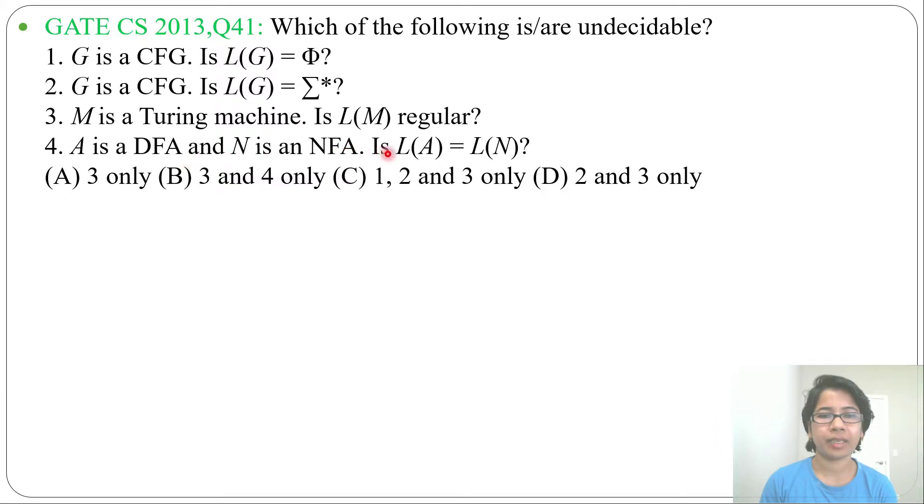Statement 4: A is a DFA and N is an NFA, is L(A) = L(N)? Four options are given: (A) 3 only, (B) 3 and 4 only, (C) 1, 2, and 3 only, (D) 2 and 3 only. Let's go one by one.